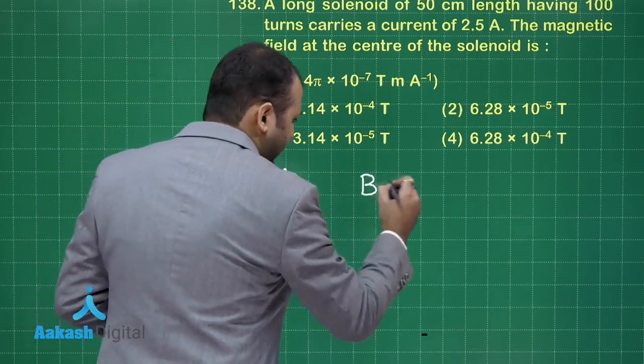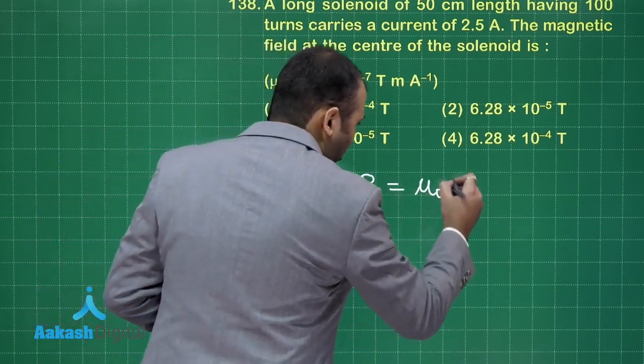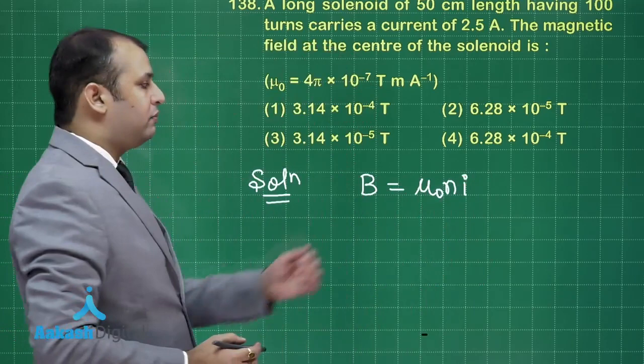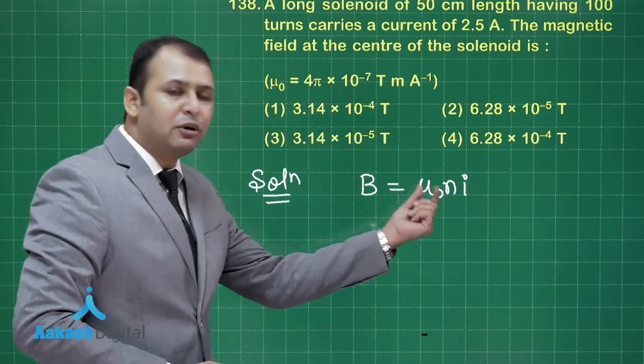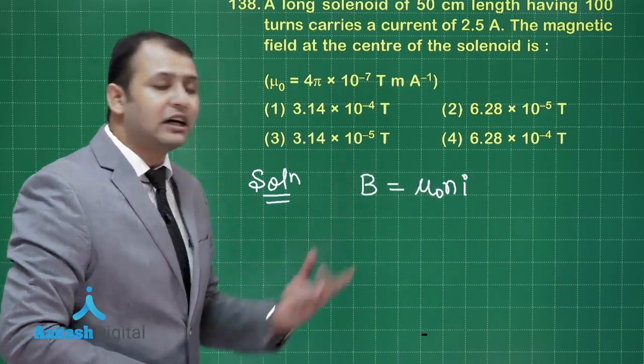Here, what will you get? Magnetic field B can be written as mu naught N into I where mu naught is the permeability of free space. N is the number of turns per unit length and I is the current flowing through it.